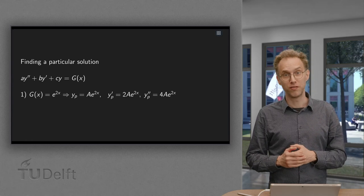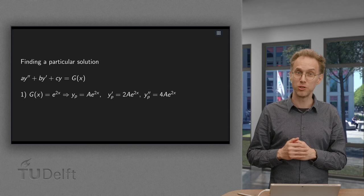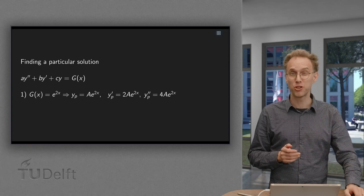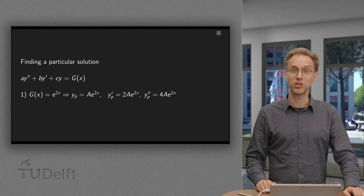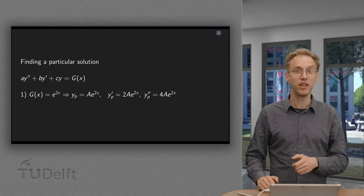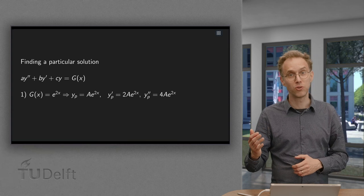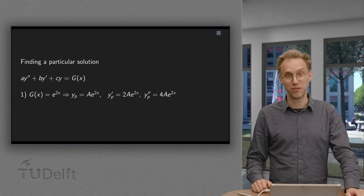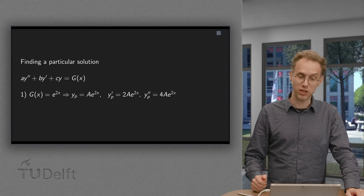In the method of undetermined coefficients, we use a trial solution to determine a particular solution of an inhomogeneous equation. But how do you find a suitable trial solution? In this video, we will discuss this for most cases to get us started. Eventually, we will discover that we need to modify our method slightly to cover the more nasty cases. We will do so in a later video. For now, this video will give you a pretty good idea to get started.